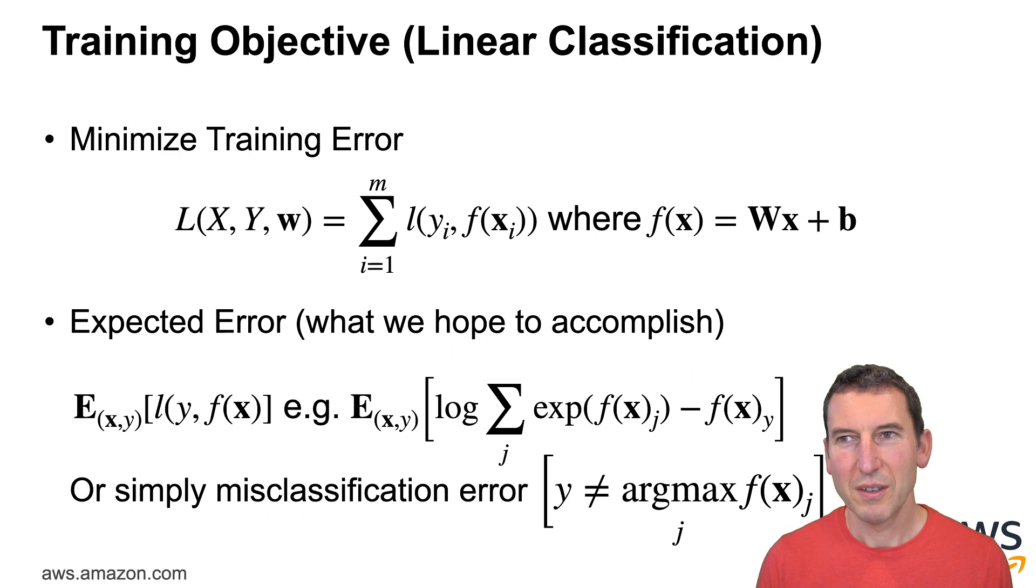So in short again what we do is we want to minimize the training error and then the expected error is exactly the same as what we have before in the regression case just that we now have a much more complicated loss function namely we want to minimize the expected negative log likelihood. Why is this a good idea? Well that's effectively the number of extra bits that I have to pay between what I'm predicting and what actually happens. I could also try to simply minimize the misclassification error but that's not differentiable, not smooth and so on, and so this makes life a lot harder which is why people go with the other term.